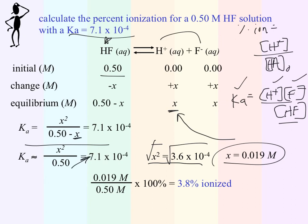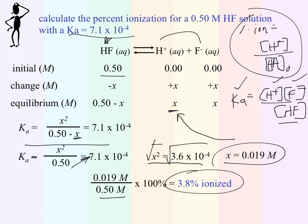I take my X concentration at equilibrium, plug it into my percent ionization equation, divide by the initial concentration of HF, multiply by 100, and get my ionization percentage. Notice this also works as a check to see if the approximation method was acceptable — if percent ionized is less than 5%, the approximation is appropriate. This is just another way to use Ka and your ICE tables to figure out pH, percent ionization, and if you know your pH, you can go the other way as well.